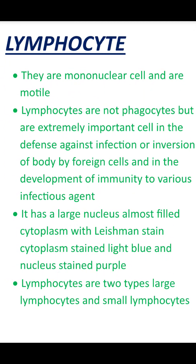With a Leishman stain, the cytoplasm is light blue and the nucleus is purple. When we look at the Leishman stain, our cytoplasm is light blue and the nucleus is purple.